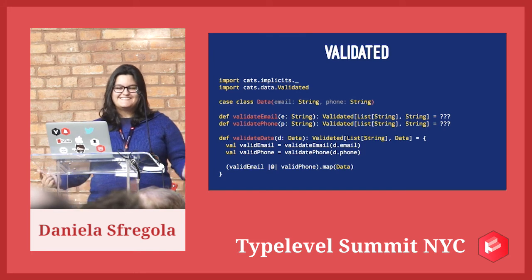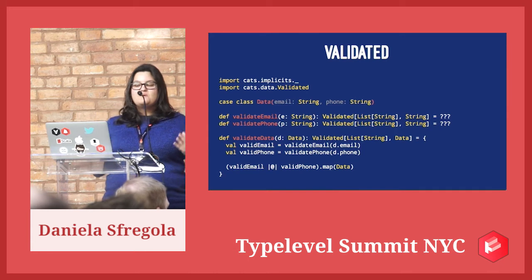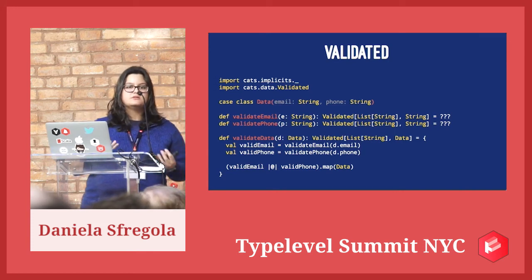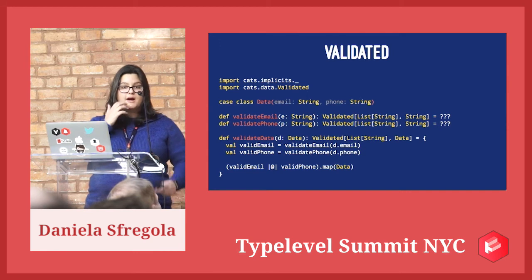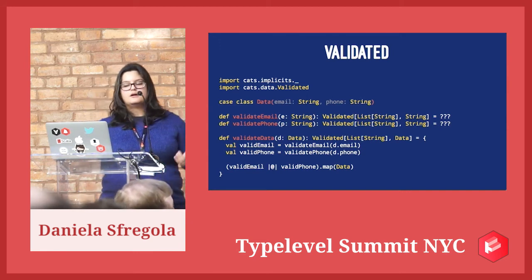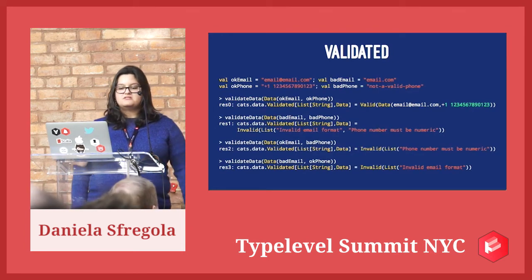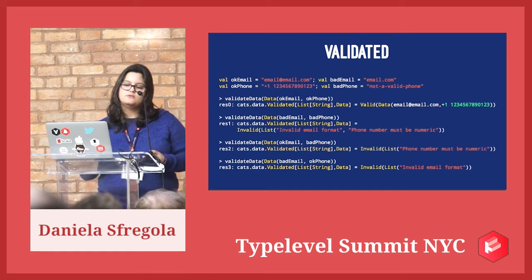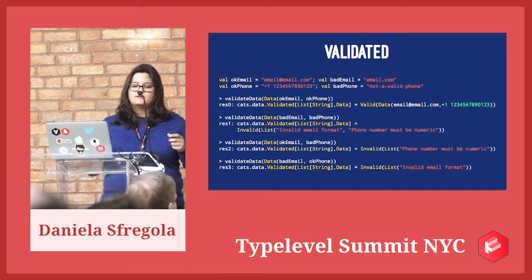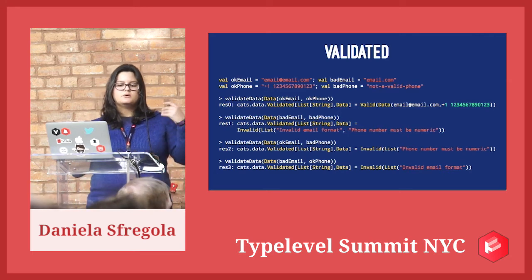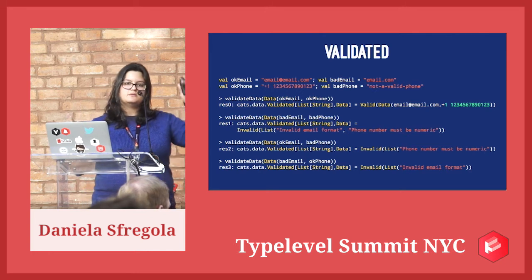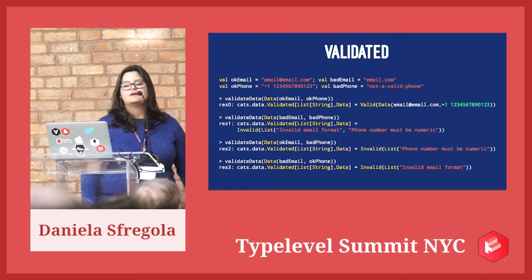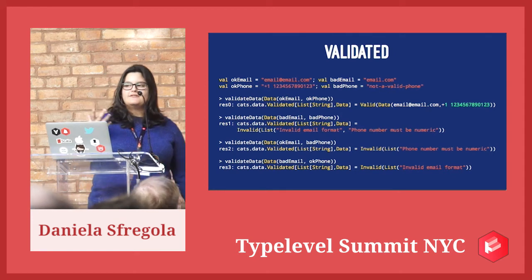Let's rewrite our case study using Validated. Same as before, a case class Data with two fields, email and phone. validate_email returns a Validated with either a list of strings or a string, same for phone. In our validate_data function, we cannot write a for comprehension anymore because there's no flatMap - we're forced to write all operations in one line. All operations run in parallel, all results are collected, and if they're all valid, we map over the tuple to build our case class. Does this function work? Yes, it works!